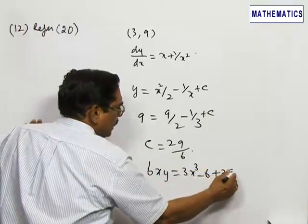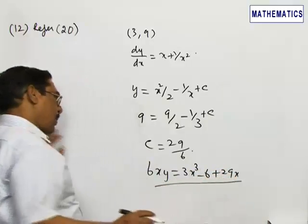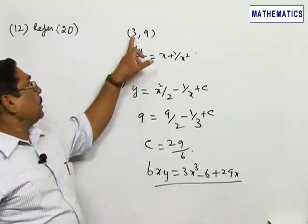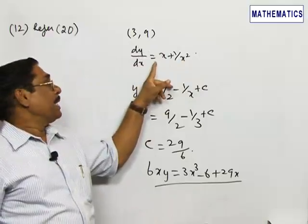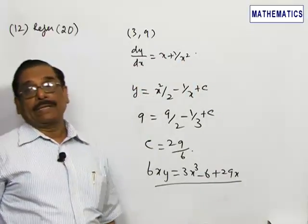This is the required curve passing through (3, 9) and satisfying the differential equation dy/dx = x + 1/x².